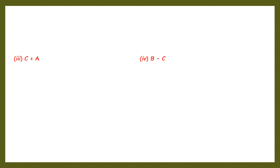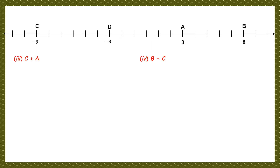Question 3. Looking at the number line, C is minus 9 and A is 3. We have to add C and A, substituting the values: minus 9 plus 3. Signs are different — put the sign of the bigger number and subtract: 9 minus 3 is 6. So the answer is minus 6.